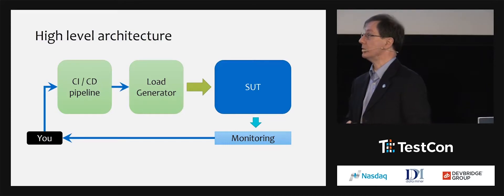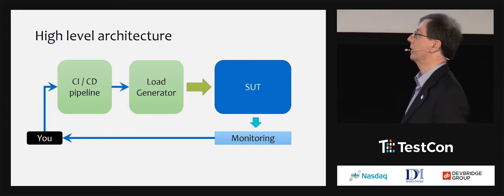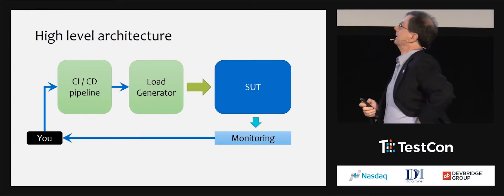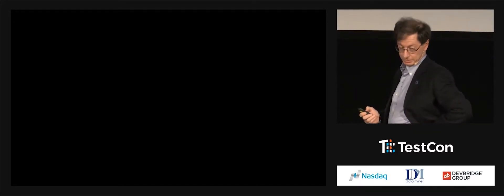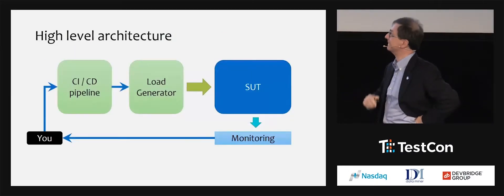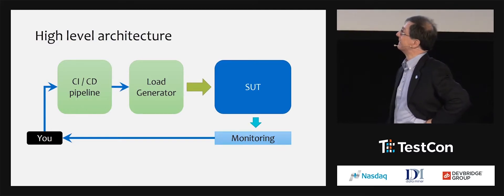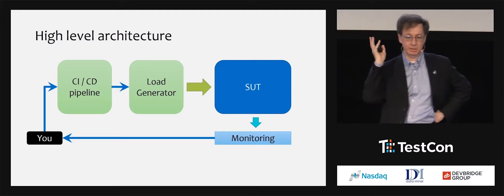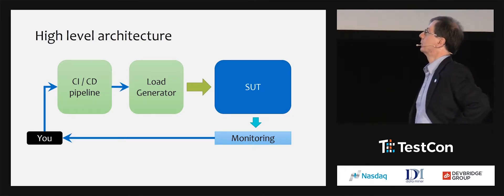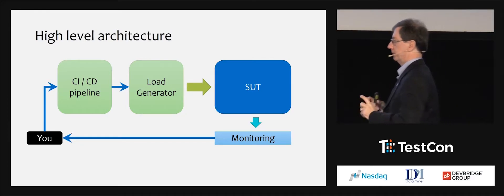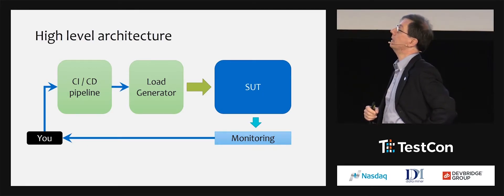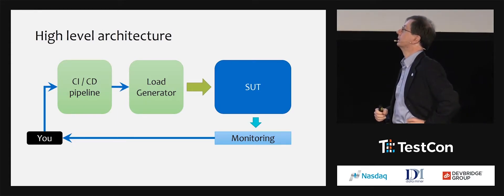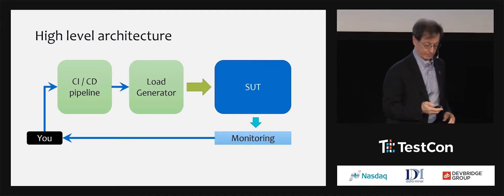In general, you have this type of architecture when adding a CI/CD pipeline. You are the tester, developer, operations person, or DevOps person. The CI/CD pipeline — whether Jenkins, TeamCity, TFS, Bamboo, or whatever you prefer — usually has some kind of task component that will interact with a third-party tool for load generation, which is doing the actual load testing on the system under test. And then you have monitoring. It's up to you to correlate these things.